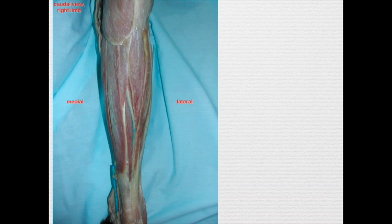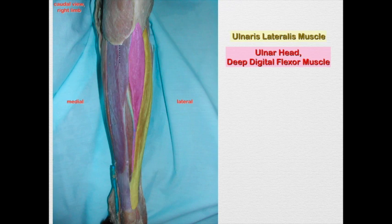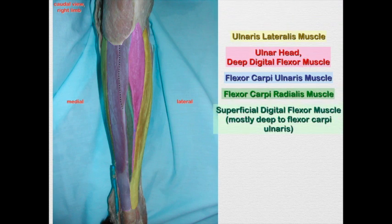Here we're looking at the caudal aspect of the antebrachium. We see the ulnaris lateralis muscle, which is innervated by the radial nerve. You see the ulnar head of the deep digital flexor muscle — that one's sometimes tricky; you need to follow its tendon distally. There's the flexor carpi ulnaris muscle and the flexor carpi radialis muscle. Here we see the superficial digital flexor muscle, mostly deep to the flexor carpi ulnaris. It's not as superficial as we see in the canine. The ulnar head of the deep digital flexor, the flexor carpi ulnaris, and the superficial digital flexor are going to be innervated by the ulnar nerve.